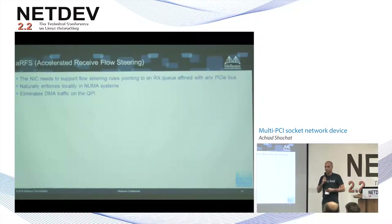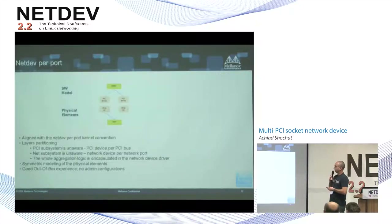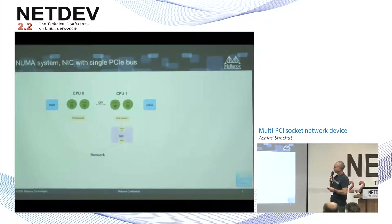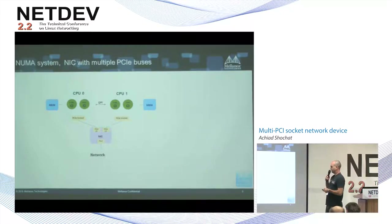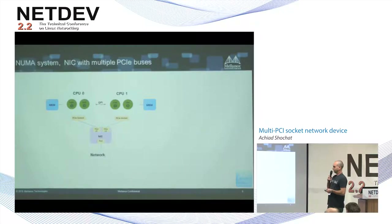The strong benefit of using ARFS in a NUMA system is that it can be used to completely eliminate DMA traffic on the QPI. With ARFS, each core directs its traffic to its own receive queues. Since the receive queues of a core are affined with its local PCI bus, each core will receive its traffic directly from the PCI socket that is local to it. This results in zero QPI traffic for networking DMA — a very strong feature.